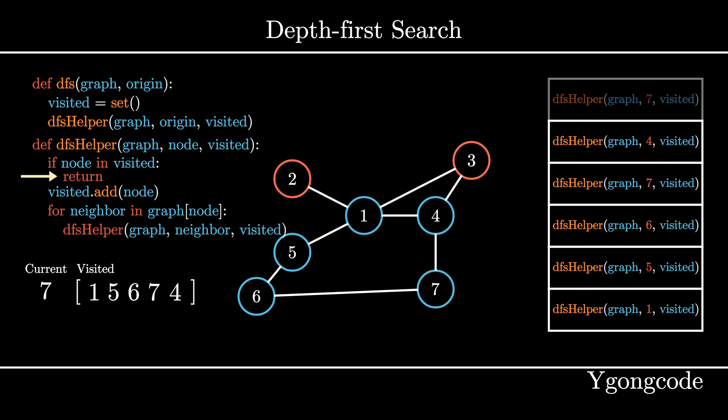At dfsHelper 4, we find another neighbor, node 1, and call dfsHelper on node 1 and add it to the call stack.